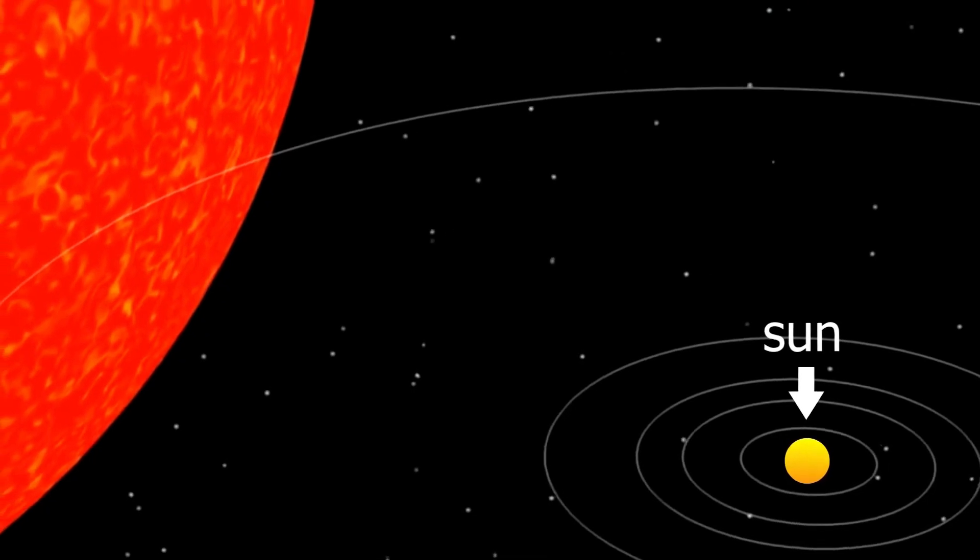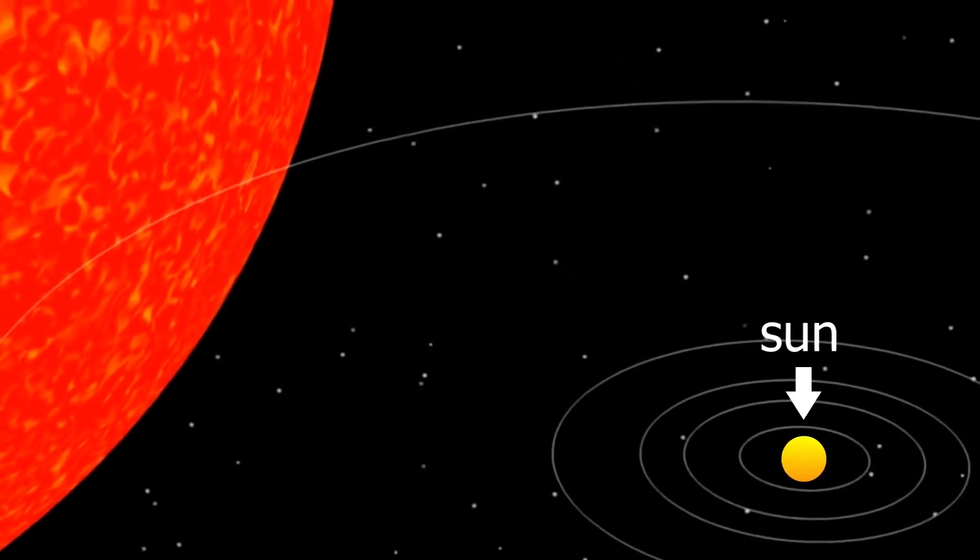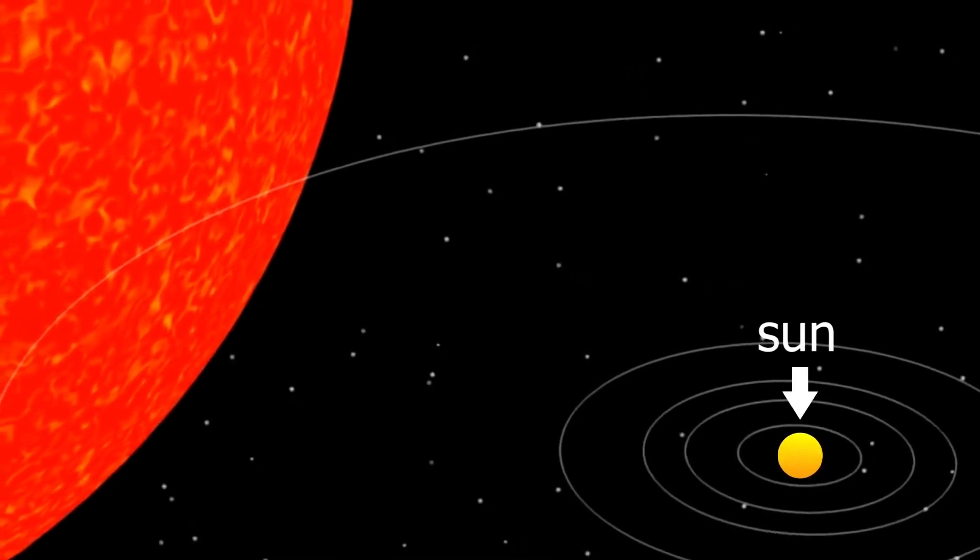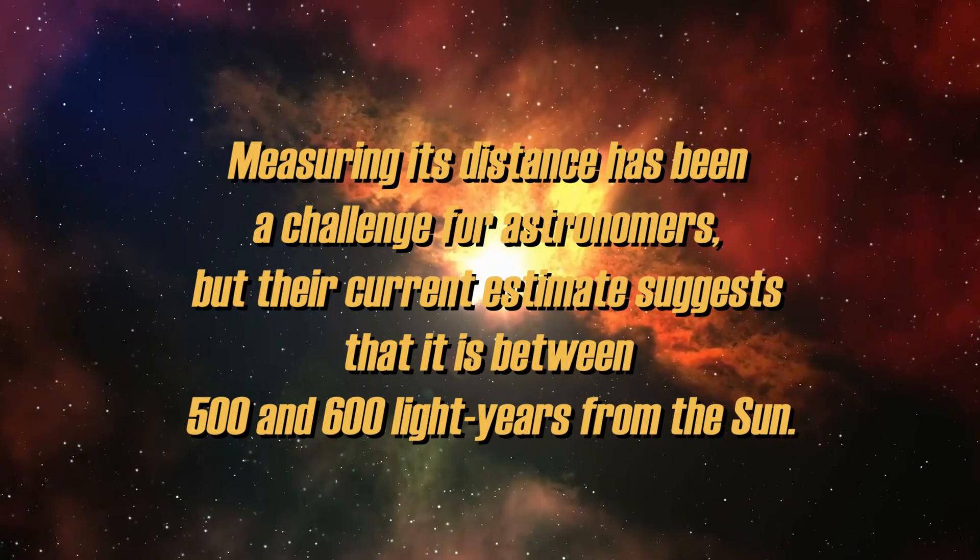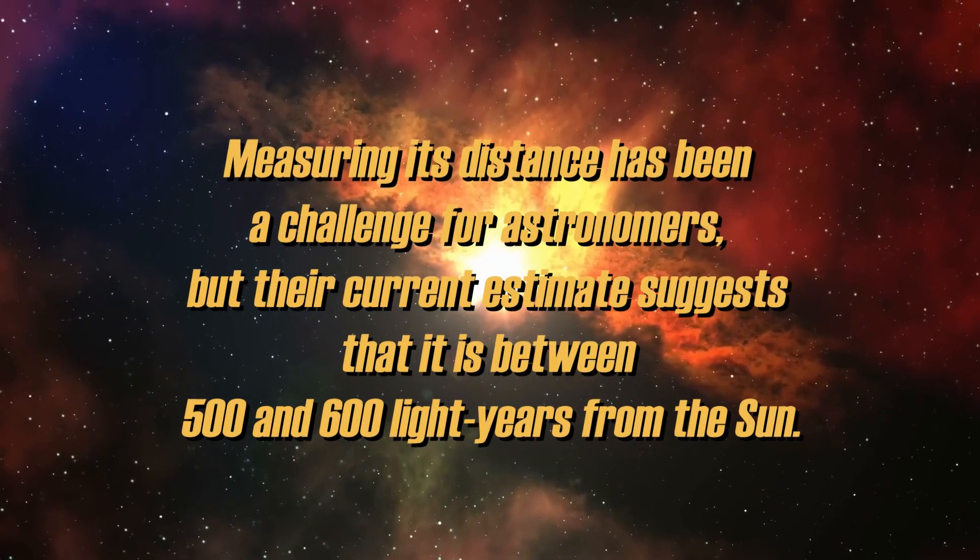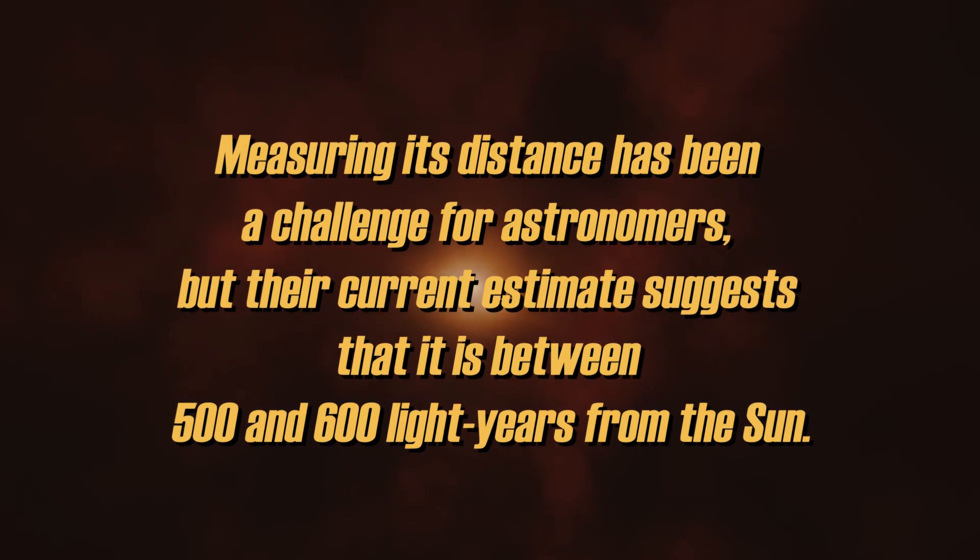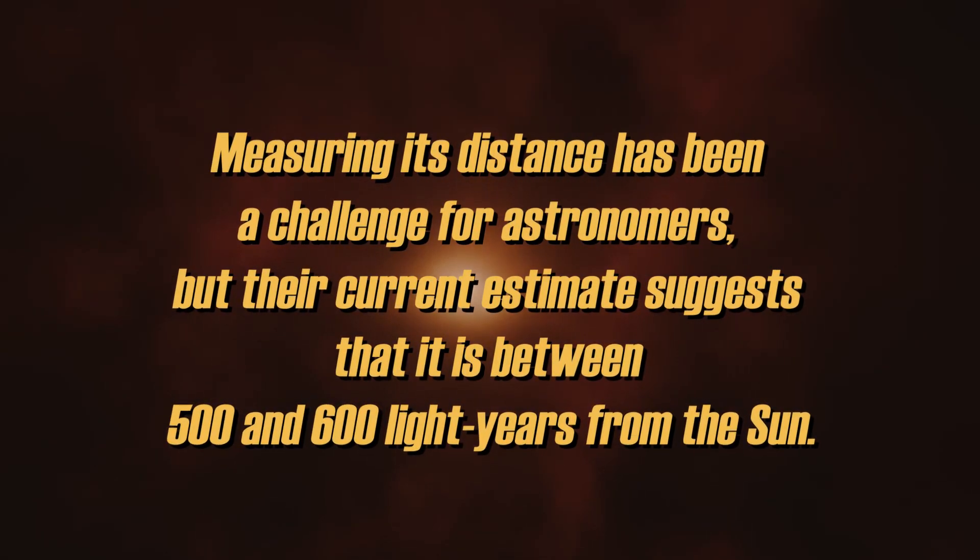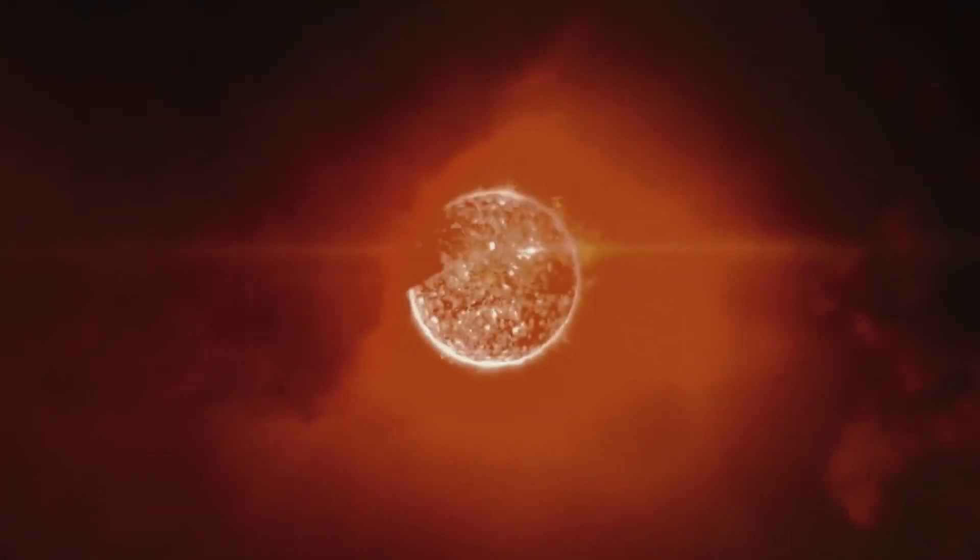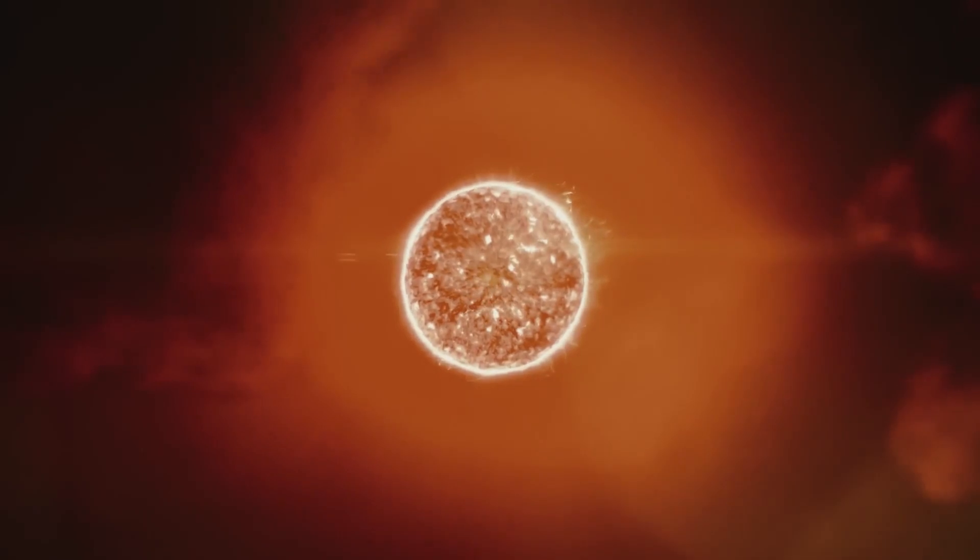According to calculations, Betelgeuse's mass ranges from 10 to just over 20 times that of the Sun. Measuring its distance has been a challenge for astronomers, but their current estimate suggests that it is between 500 and 600 light-years from the Sun. This supergiant is less than 10 million years old and has evolved rapidly due to its large mass.